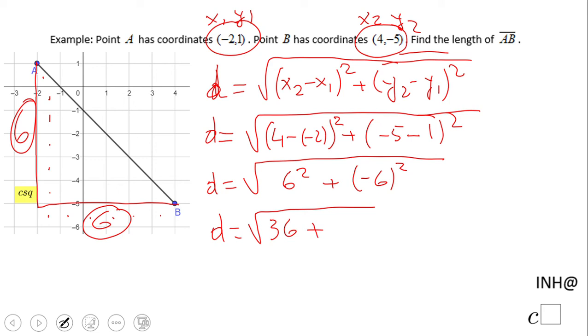So we end up with the square root of 72, which can be simplified as 36 times 2.